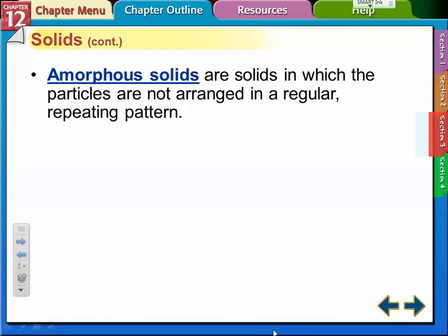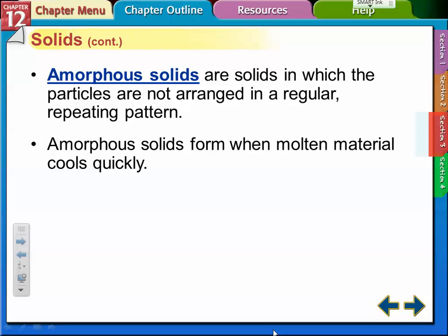Amorphous solids are solids in which the particles are not arranged in a regular repeating pattern. These would be things like plastic and glass. Amorphous solids form when molten materials cool quickly. We get plastic cooled from some petroleum-based product. Glass is made from when sand is heated up and cooled quickly.